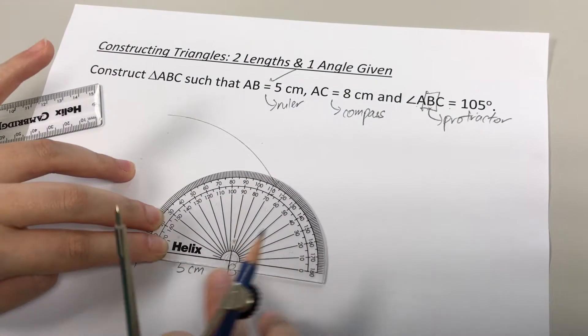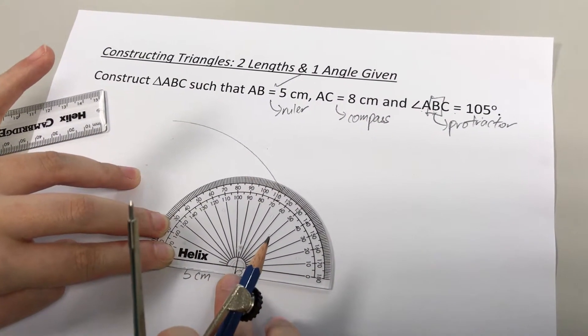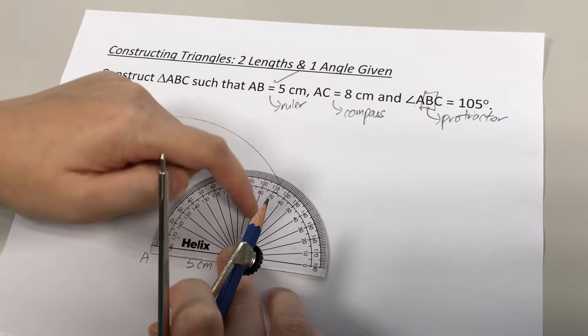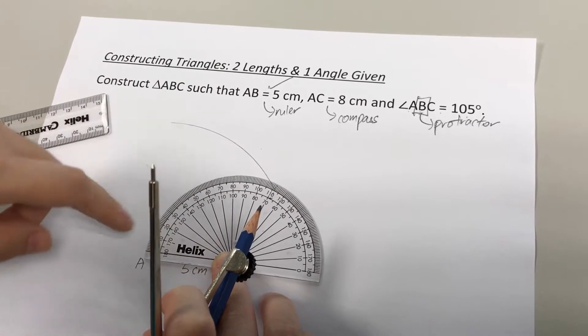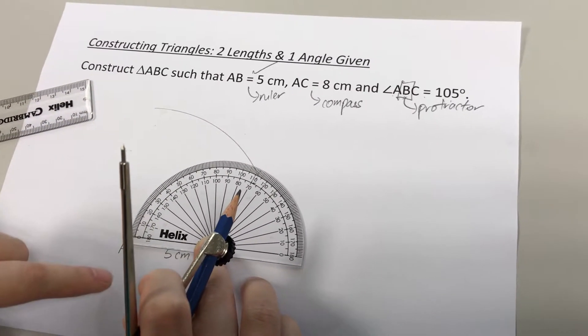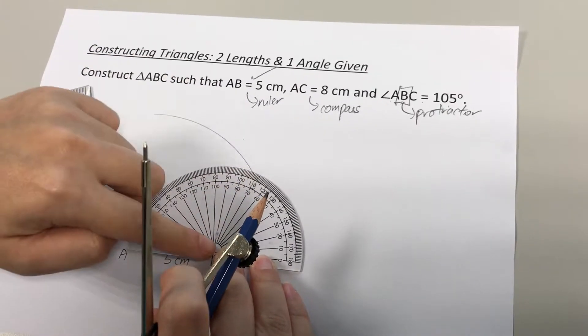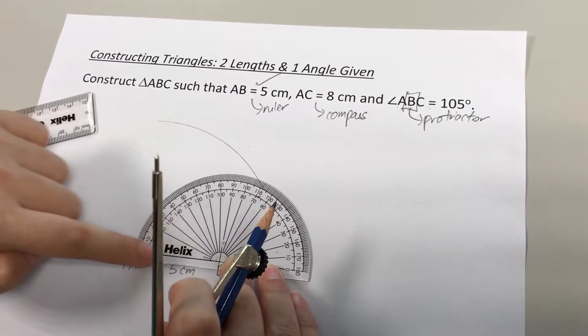Like this. The middle of my protractor is now at point B. Be careful about this because in your protractor, you always have two sets of numbers. You need to make sure that you use the correct set of numbers. You always use the set of numbers whereby the starting line points to zero.